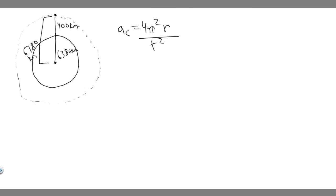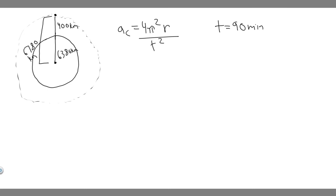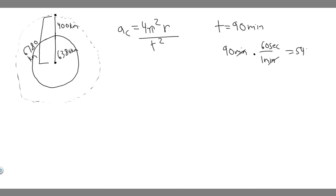It circles the earth about once every 90 minutes, so T = 90 minutes. But when we solve this we want everything in meters per second, since acceleration is in meters per second squared. So we need to convert 90 minutes into seconds: 90 minutes times 60 seconds per minute gives us 5,400 seconds. That's the time for one revolution.